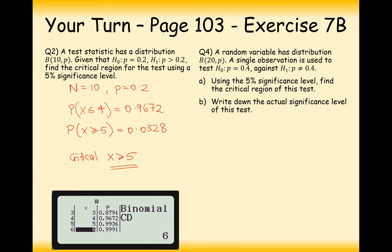The reason I worked with the upper end of the scale is because the alternative hypothesis was greater than 0.2 — so I'm assuming the outcome of the trials is going to be higher than expected with probability 0.2 and 10 trials. Remember, you have to use the CD mode on your calculator — the cumulative distribution probability — rather than the PD mode. That's a good rule for the whole of hypothesis testing: always binomial CD mode, not PD.